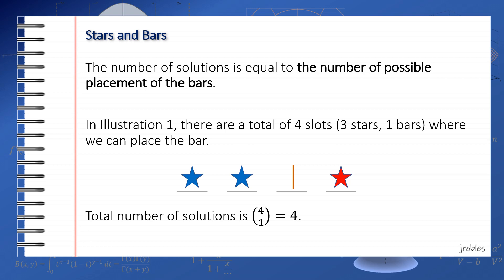Note that instead of viewing this from the perspective of placing the bars, we can also think of finding the number of positions of the stars, which in this case is C(4,3). Of course, the answer is 4 regardless of the perspective we pick.